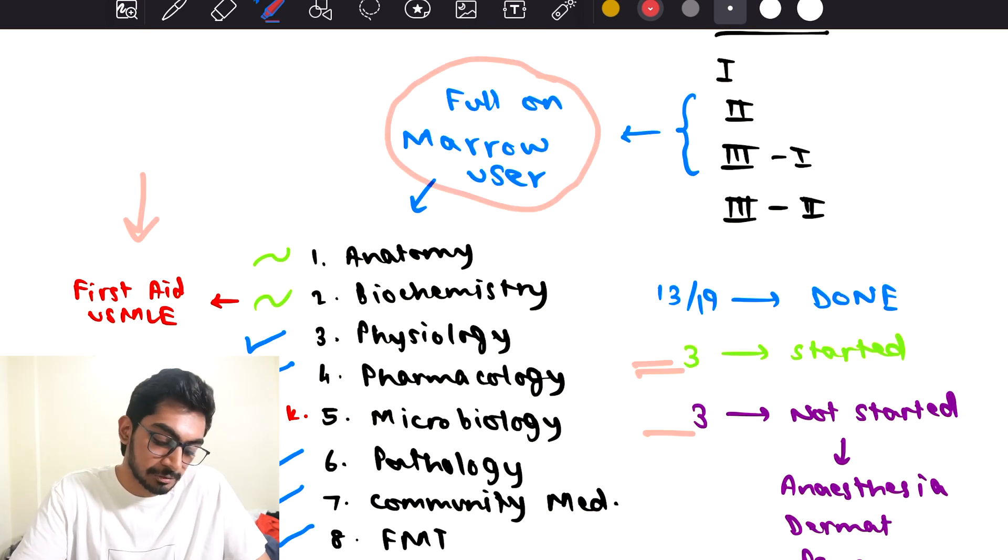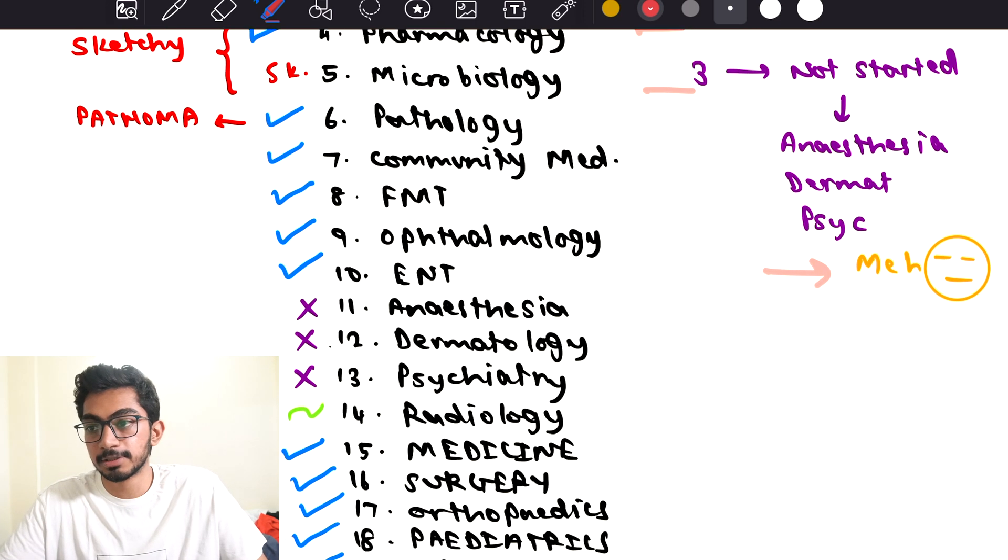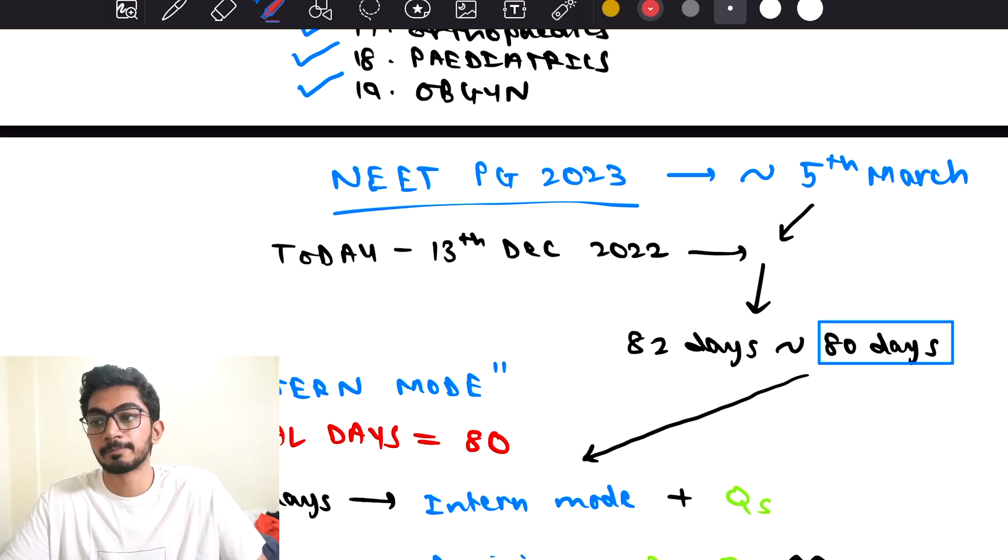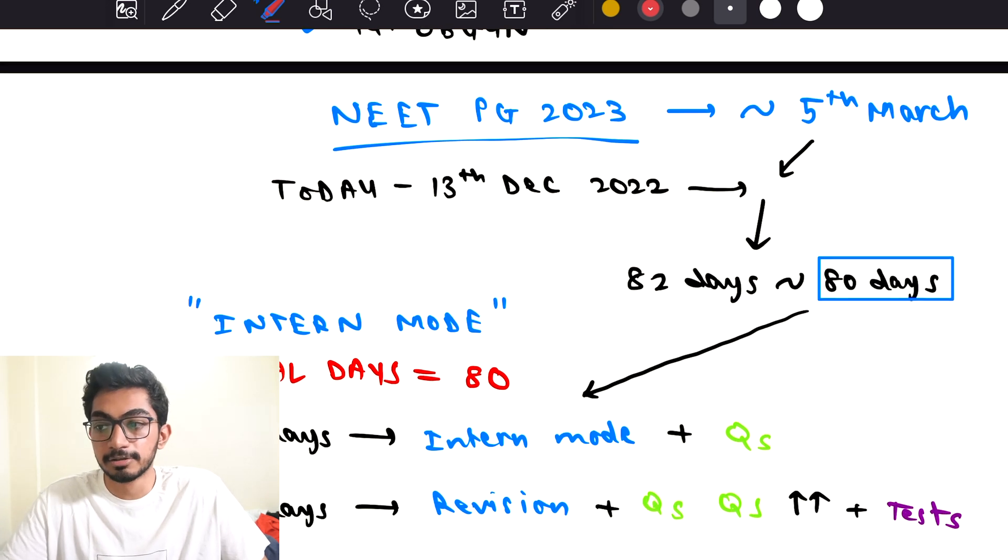I was completely a Marrow user, and so I know about the intern mode and heard a lot of people talking about it. You can finish studying faster. I would recommend this mode for people who are starting their NEET PG preparation in internship and couldn't study much because of their heavy postings till now and want to try and get a decent rank. I personally have not used this mode, but from what I've seen and heard, it covers most of the important things.